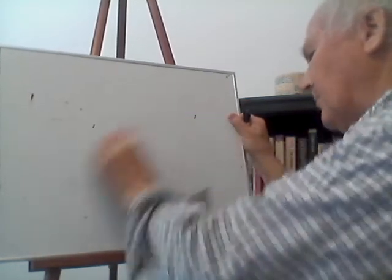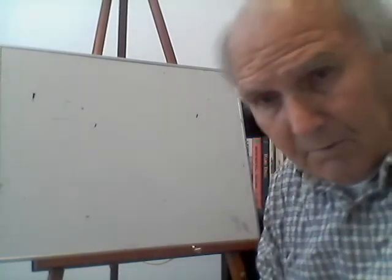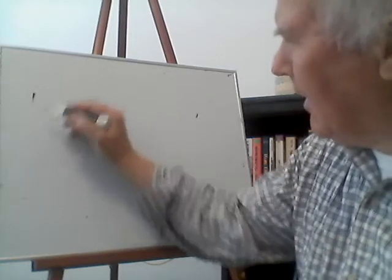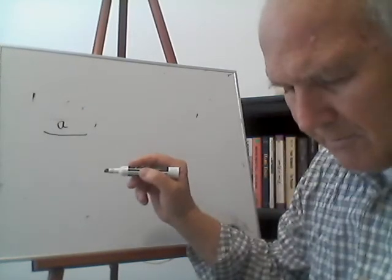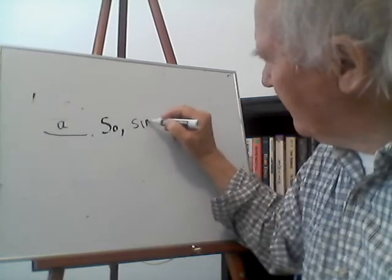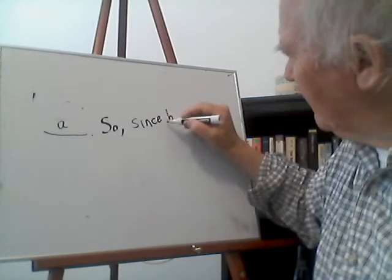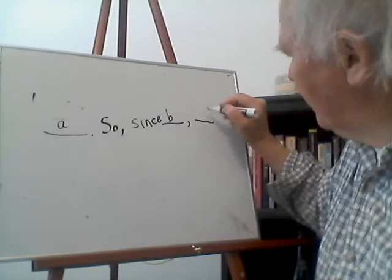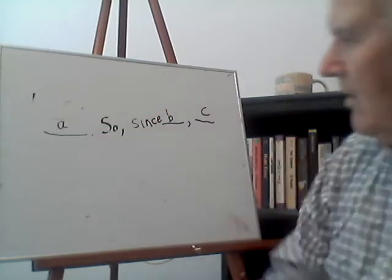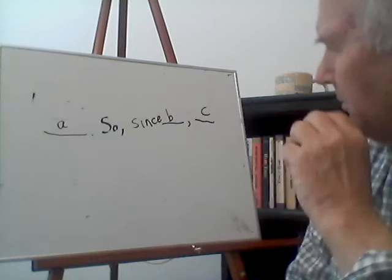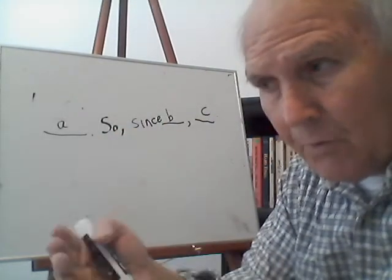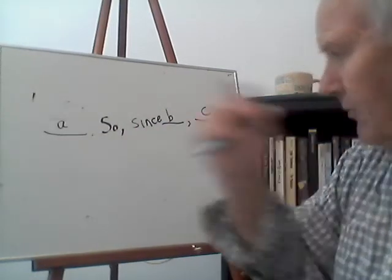Let's go to number two of Exercise 2.1. It goes: A, so, since B, C. The word 'so' is a conclusion indicator — it's like 'therefore.' The word 'since' is a premise indicator. It's very important to remember the difference between premise indicators and conclusion indicators, because understanding that makes it very easy to figure out what the argument is.